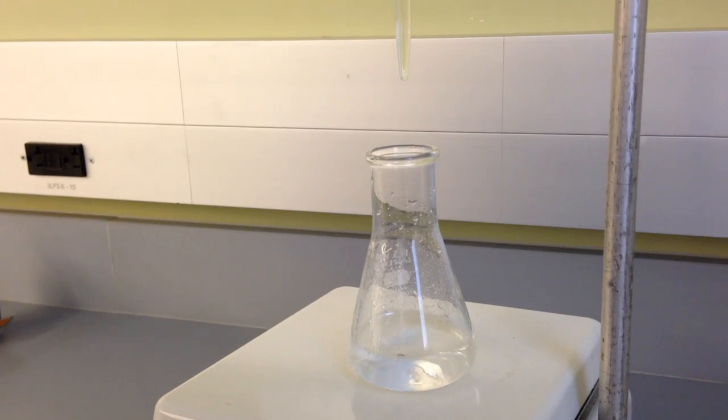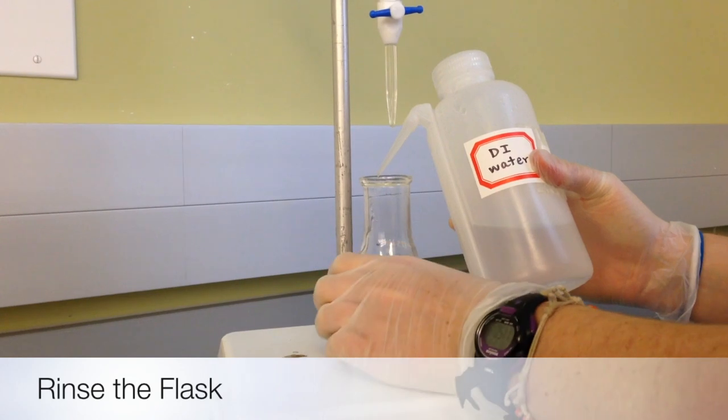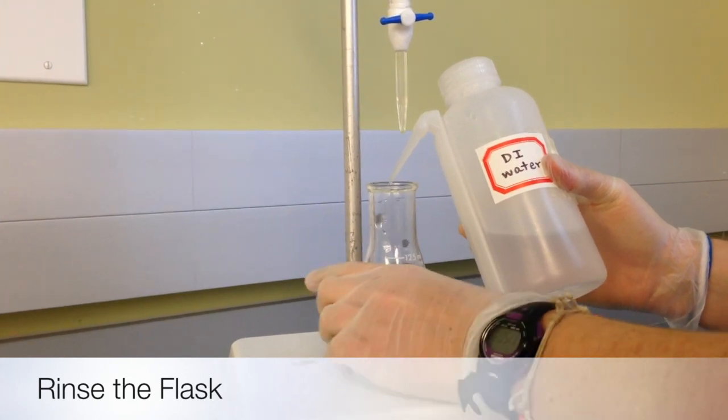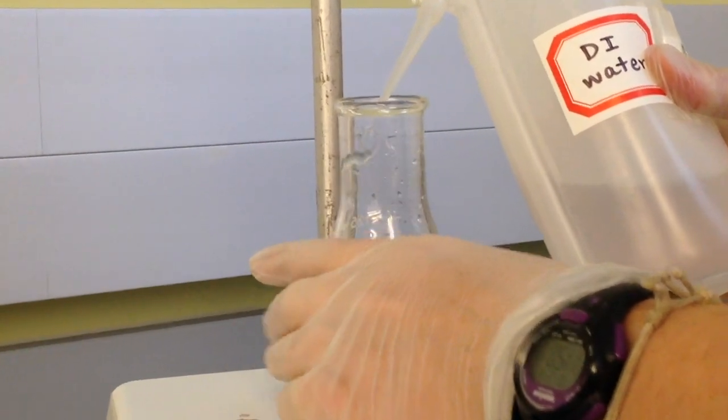So make sure the stir bar is stirring the solution steadily. And make sure you rinse the walls of the flask with about 15 milliliters of deionized water, so that all the analyte and indicator are in solution.